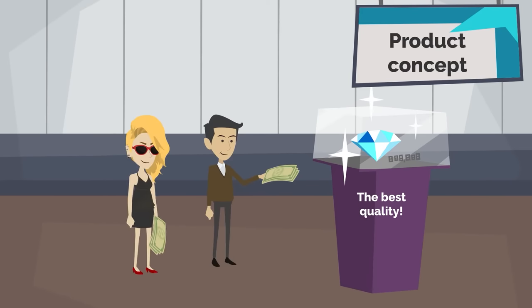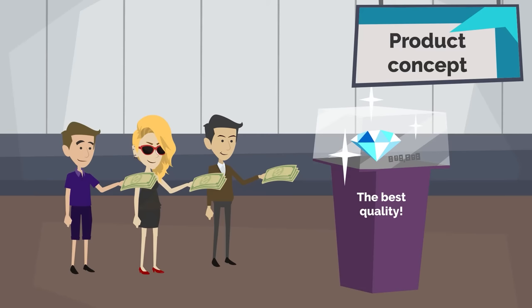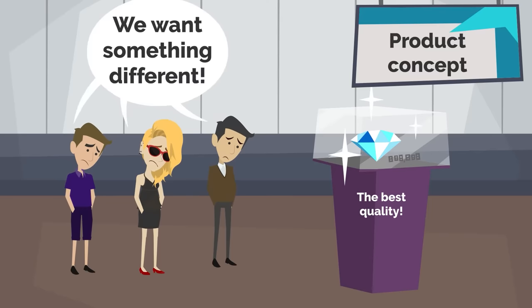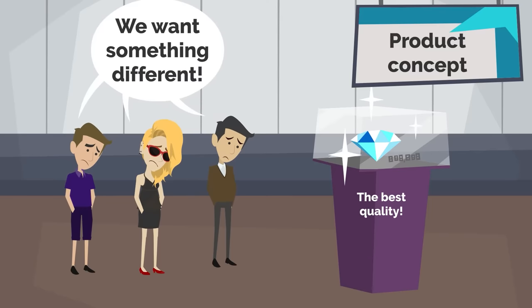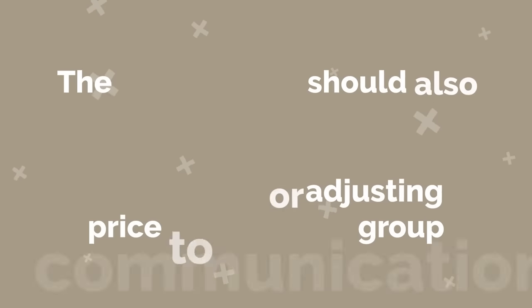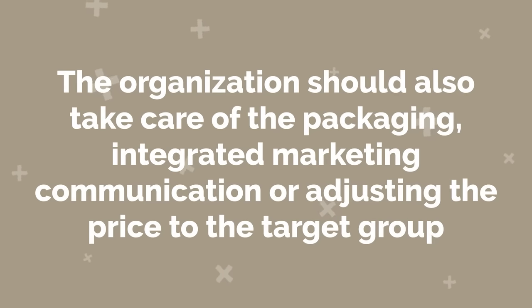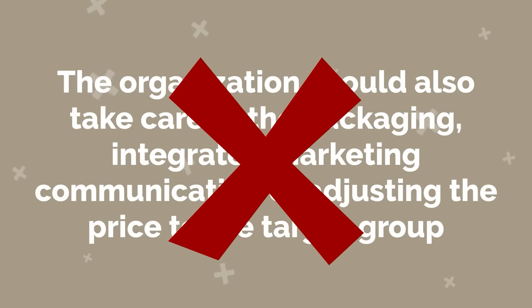The product concept is also accused of marketing myopia. Often the organization thinks that if it creates a product of better quality than the competition, then every consumer would desire it — while the customer might actually look for a substitute solution. What is more, the organization should also take care of packaging, integrated marketing communication, or adjusting the price to the target group. However, these aspects are ignored in the case of product orientation.